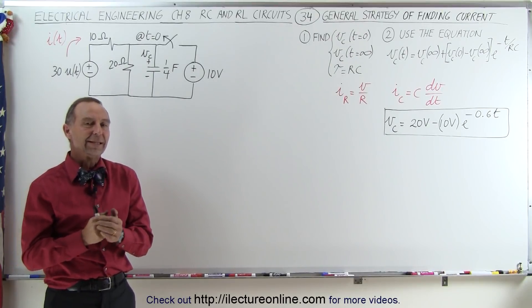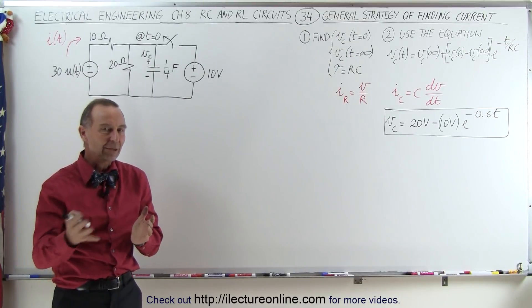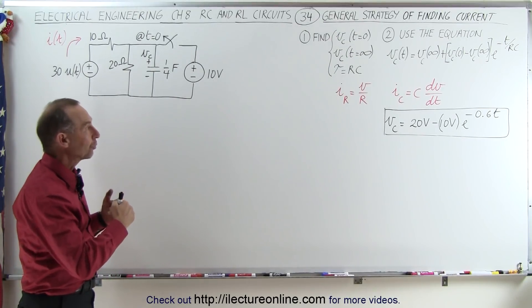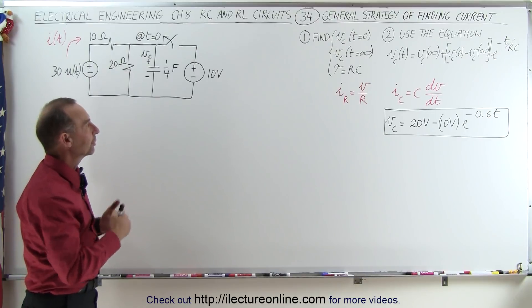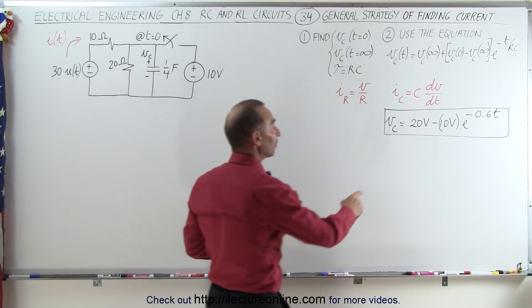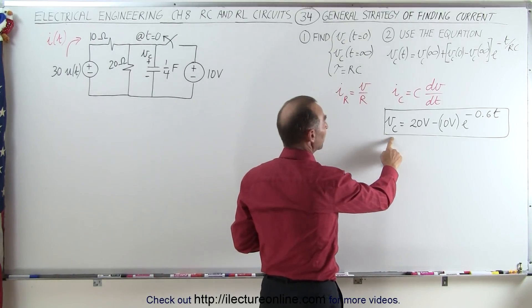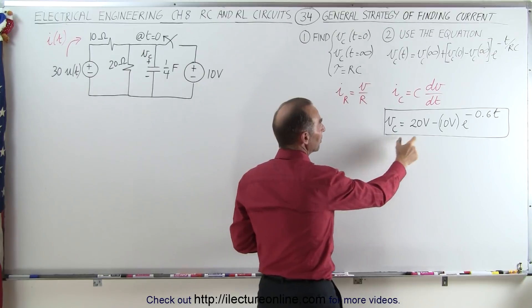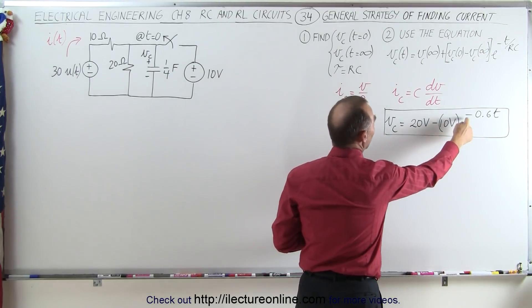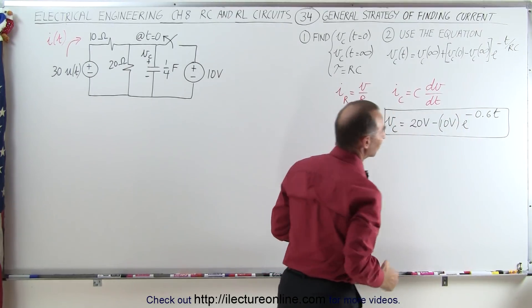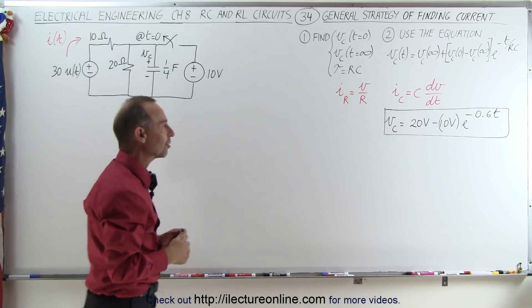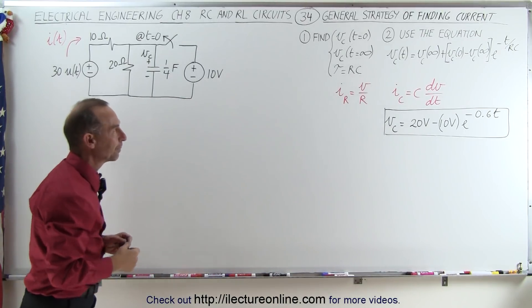Welcome to iLectroOnline. Now we're going to take the previous video and also find the current in the circuit. On the previous video we found that the voltage across the capacitor is equal to 20 volts minus 10 volts times e to the minus 0.6t, where t is divided by seconds so that the units cancel out.